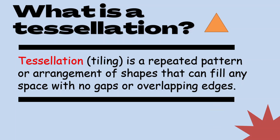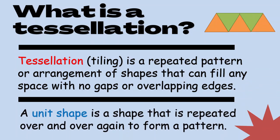Look at this. We can tessellate this shape. We can put them together to form a pattern. A unit shape is a shape that is repeated over and over again to form a pattern.